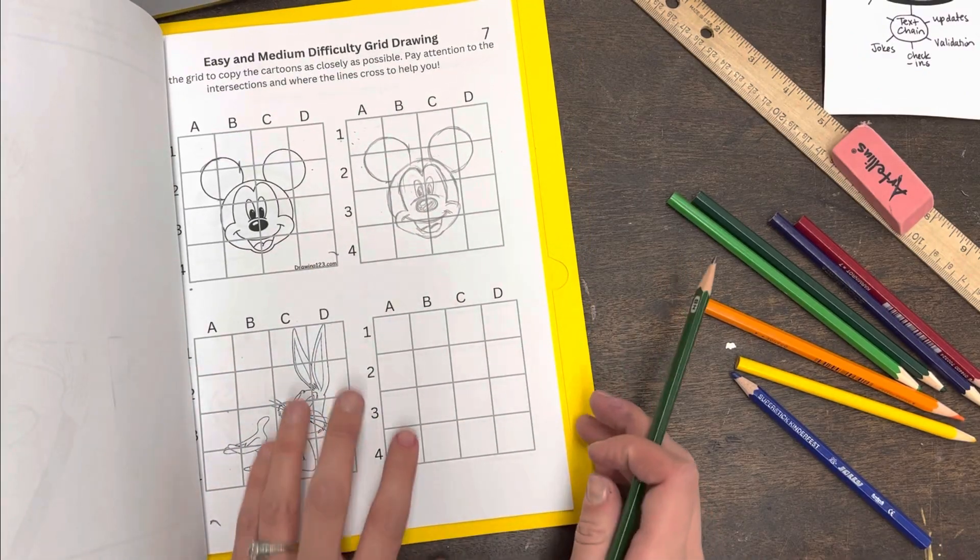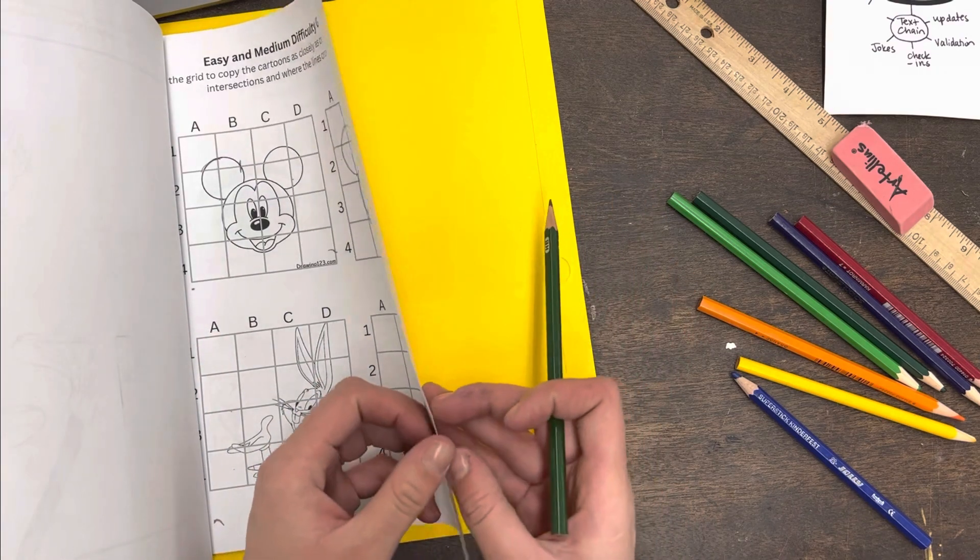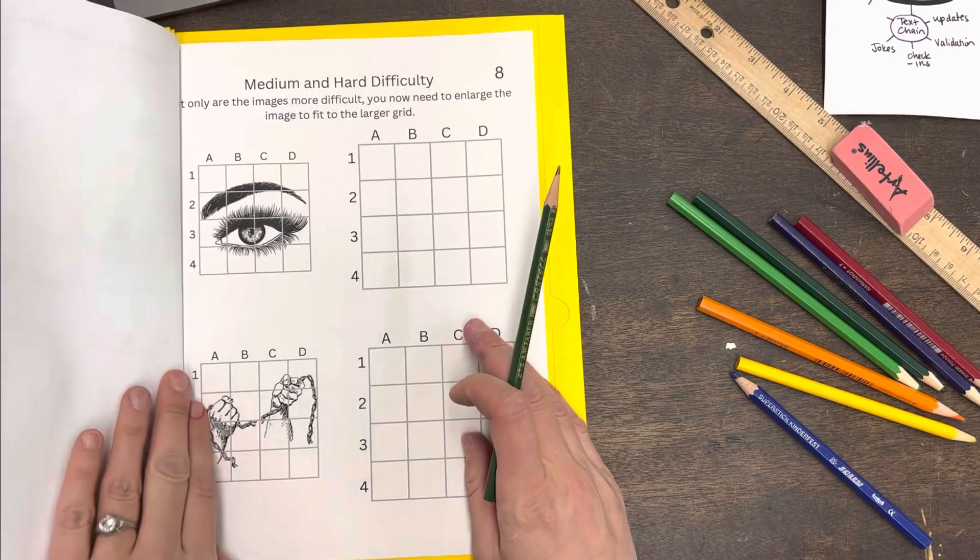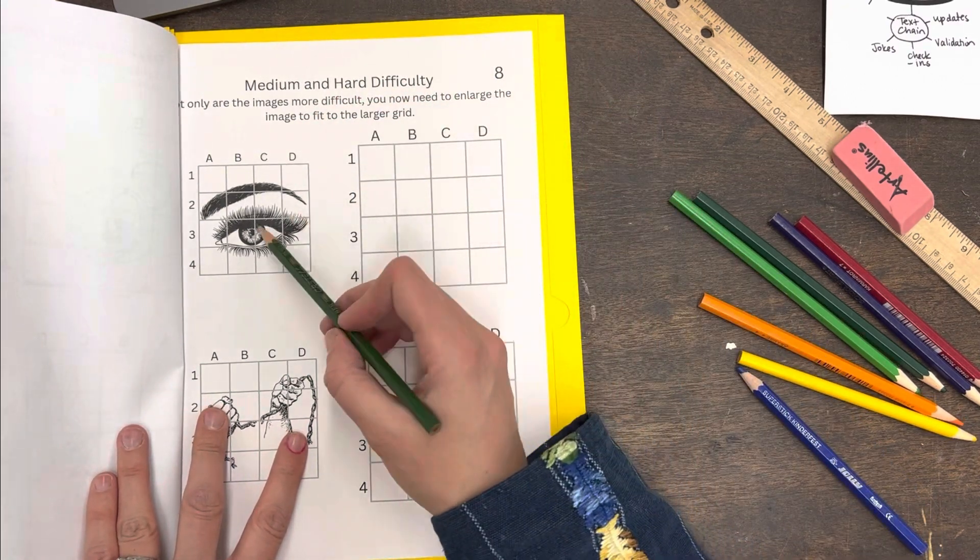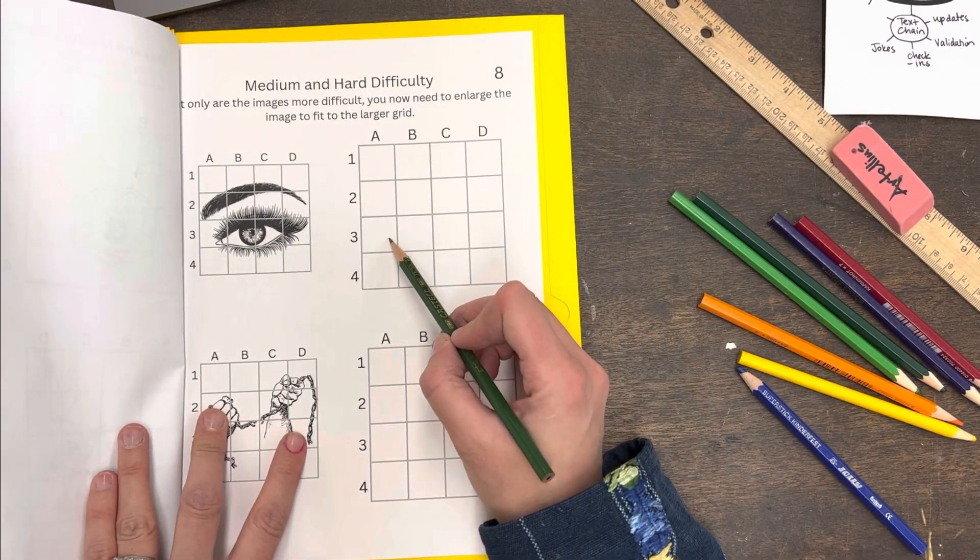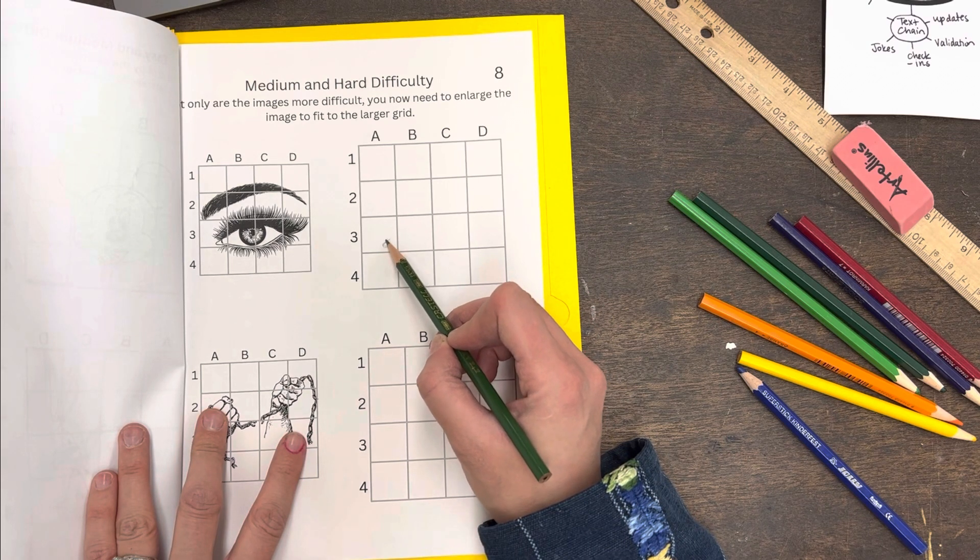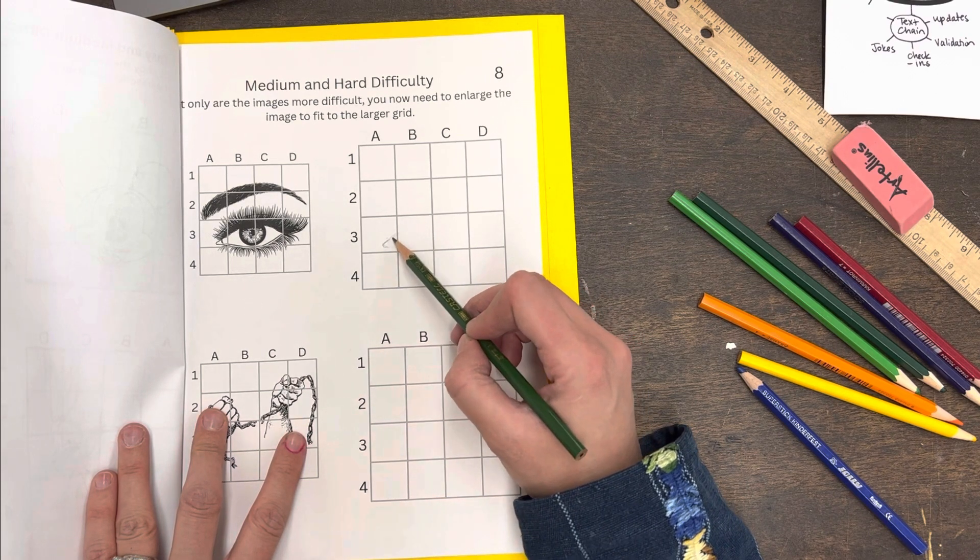So then you do the same thing down here for Bugs Bunny, and then when you switch to the next page it gets even harder because this grid is actually smaller than this grid. So you're not only going to have to copy, but you're also going to have to enlarge it to make it fit that new grid.